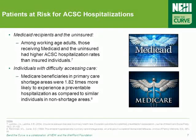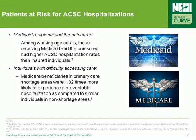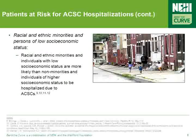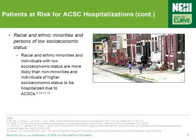Just about anyone can suffer from an ambulatory care sensitive condition, such as asthma or diabetes, and anyone who suffers from such a condition could end up being hospitalized for it. With that being said, there are a number of specific groups who are especially at risk. Those receiving Medicaid and the uninsured have been shown to have higher ACSC hospitalization rates than insured individuals, as have individuals who have difficulty accessing care. In addition, racial and ethnic minorities and individuals with low socioeconomic status are more likely than non-minorities and individuals of higher socioeconomic status to be hospitalized due to ACSCs.